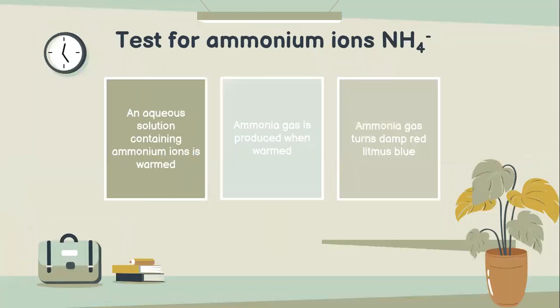Test for ammonium ions. An aqueous solution containing ammonium ions is warmed. Ammonia gas is produced when warmed, and ammonia gas turns damp red litmus paper blue.